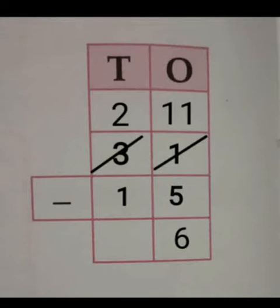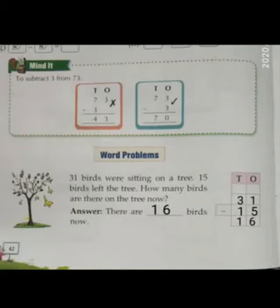Now, subtract the tens place. 2 minus 1 is equal to 1. Write 1 at the tens place. So, the subtraction of 31 minus 15 is equal to 16. So, there are 16 birds now.